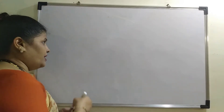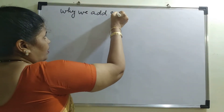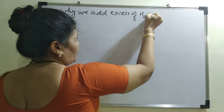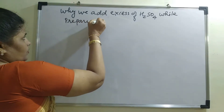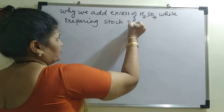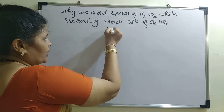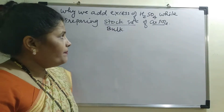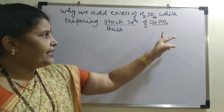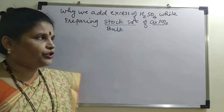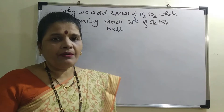In today's video we are going to see why we add excess of H₂SO₄ solution while preparing a stock solution of copper sulfate. A stock solution means the solution which is prepared in bulk. While preparing some solutions in advance or in bulk, we add certain substances — like H₂SO₄ in case of copper sulfate — so we can make the solution clear. In order to obtain clarity, we will be adding excess of H₂SO₄.